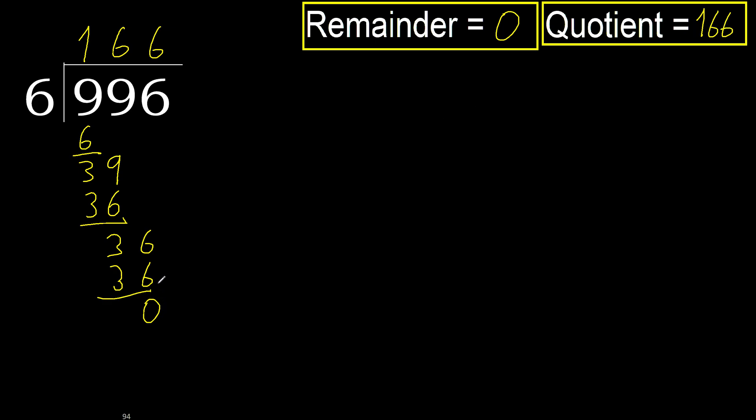Ok, 0. Therefore 996 divided by 6 is 166.